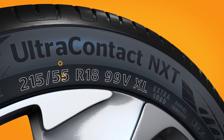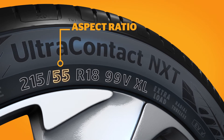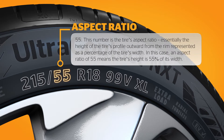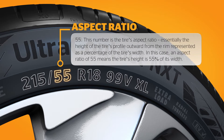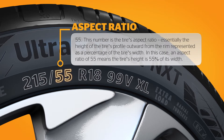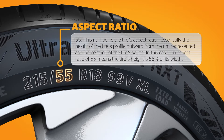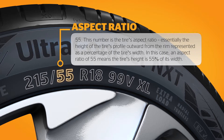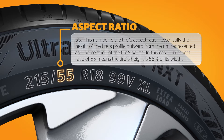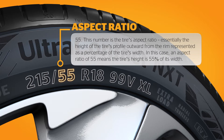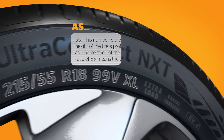55. This number is the tire's aspect ratio. Essentially, the height of the tire's profile outward from the rim, represented as a percentage of the tire's width. In this case, an aspect ratio of 55 means the tire's height is 55% of its width.